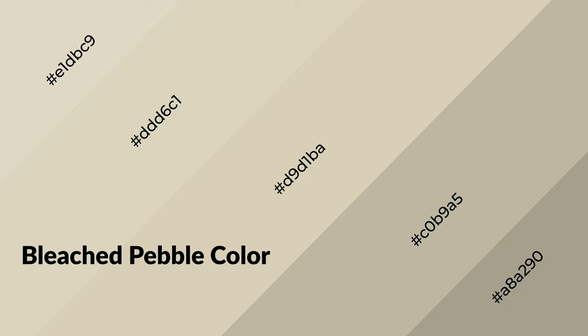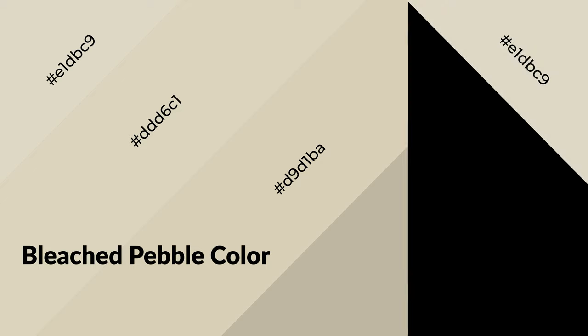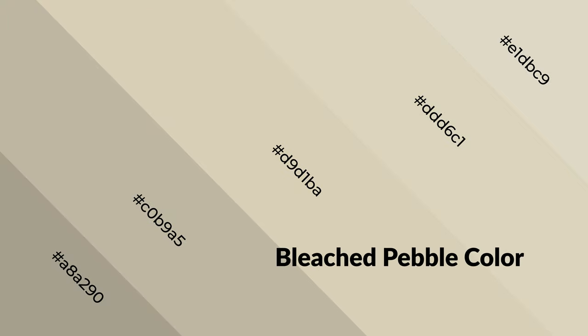Bleached pebble is a warm color and it emits cozier and active emotions. Warm colors are symbols of warmth, fire, heat, and sunshine. It also evokes joy, passion, love, and even anger. You can see warm colors used in restaurants and gyms.